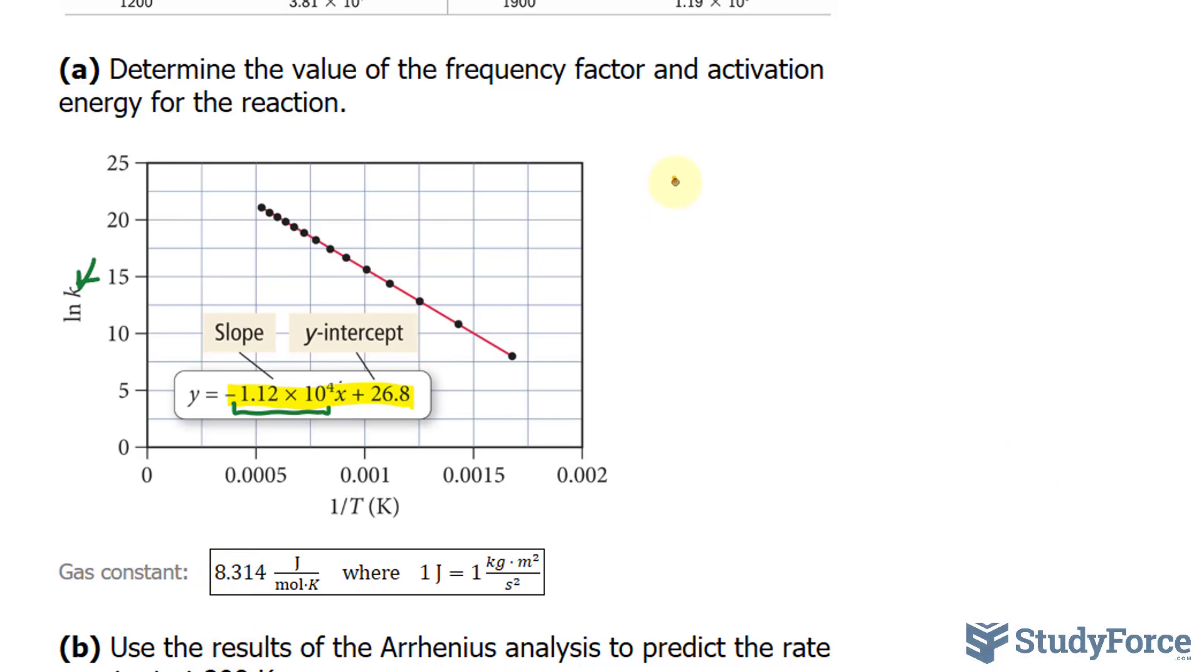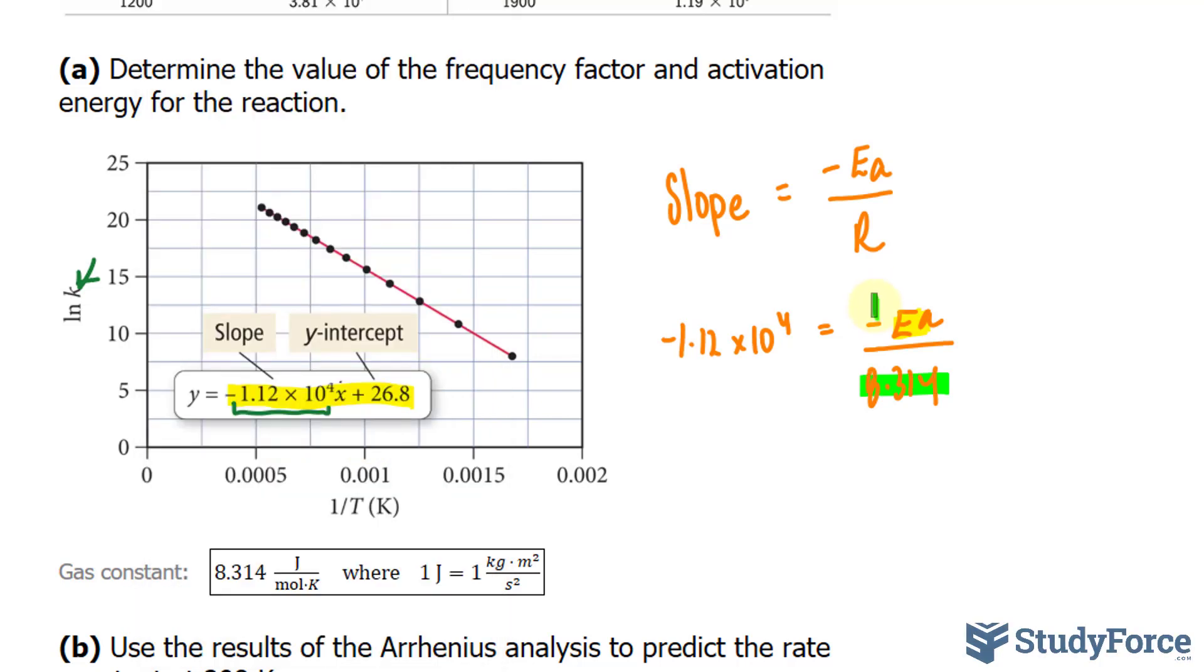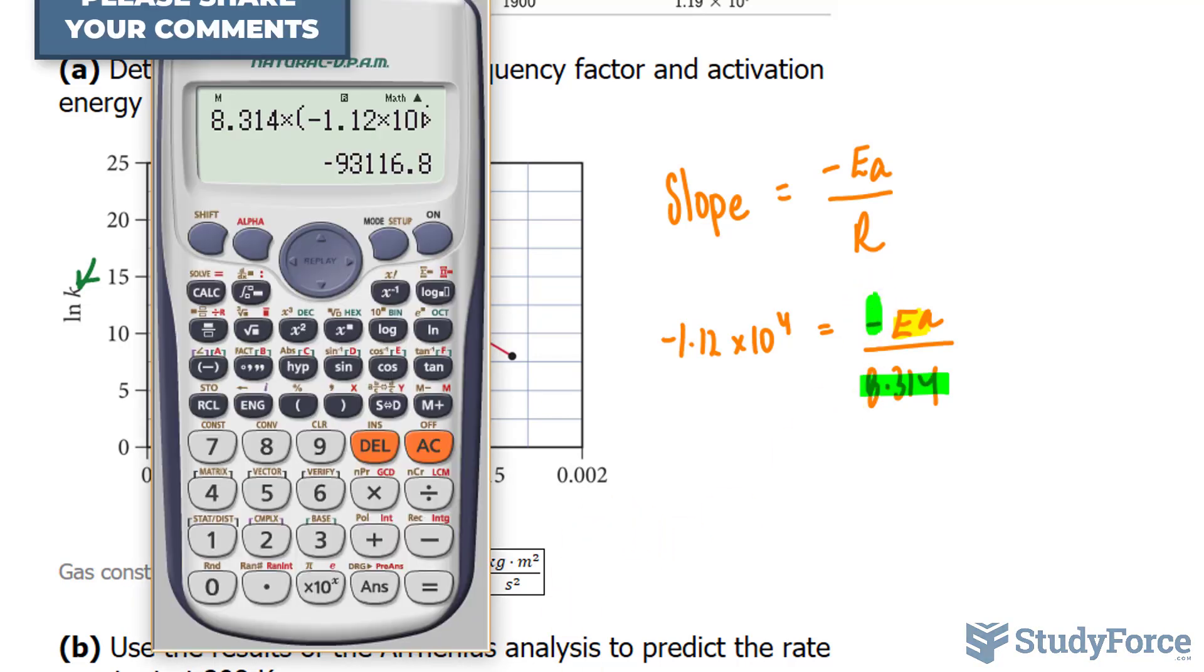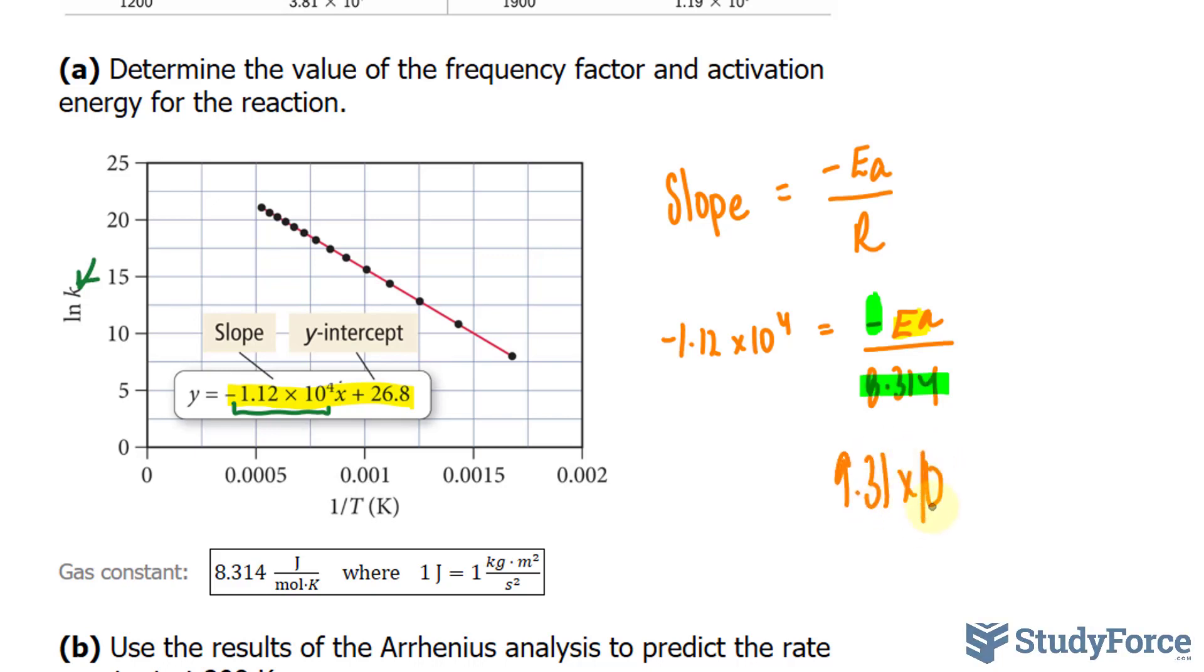Let's go ahead and write all this down. The slope, which is obtained from this equation, is equal to negative E sub a, or activation energy, over R. We'll substitute this with negative 1.12 times 10 to the power of 4, is equal to what we're looking for over 8.314. We need to isolate for this variable, and we can do that by multiplying both sides by this number. And let's go ahead and do that. 8.314 times negative 1.12 times 10 to the power of 4. We end up with negative 93116, and we divide both sides by negative to get rid of the negative in front of E. And that gives us the positive version of this number. We need this to three significant figures, so I'll simply write down 9.31 times 10 to the power of 4.